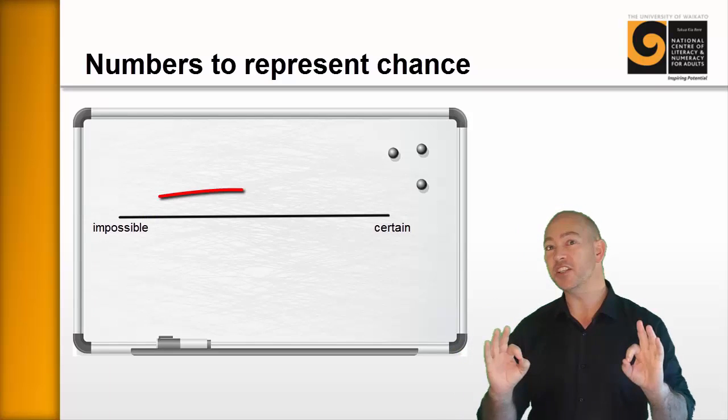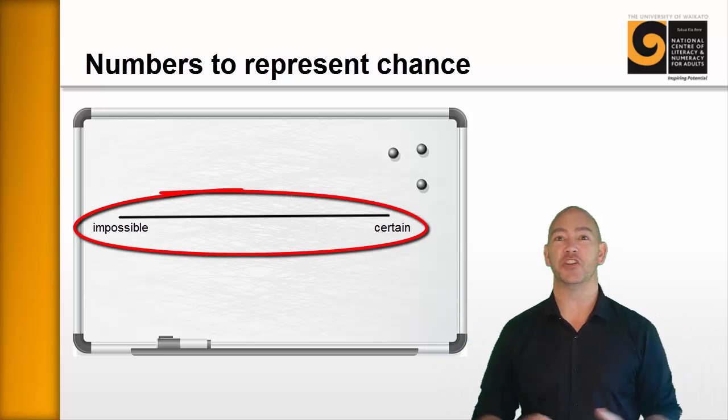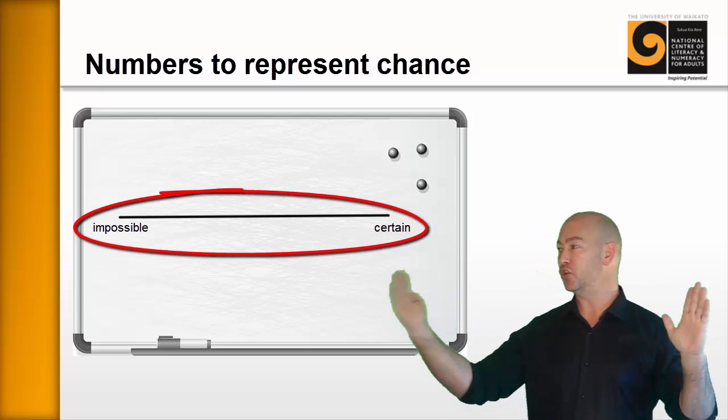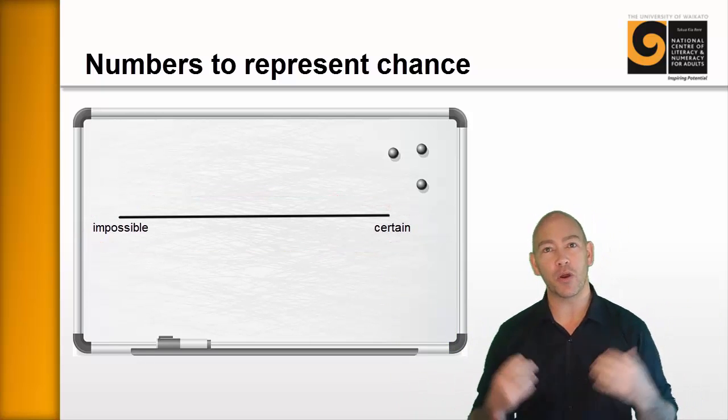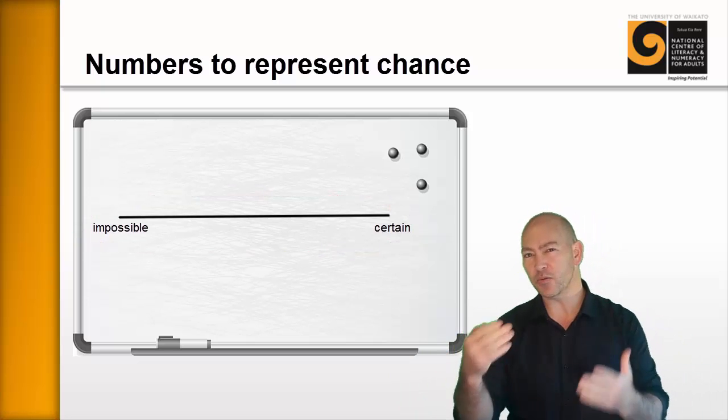Step one, draw the continuum on the board that we used in the last session. That's from impossible to certain. And ask the learners to tell you about what happened in that previous session. Get them to recall it.